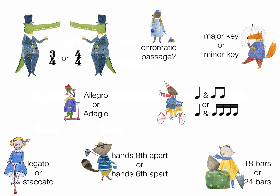Moving on to point number two: orally identify musical concepts. I'm going to play through the entire piece. As you listen, I'd like you to work out: is it in 3/4 or 4/4? Allegro or adagio? Legato or staccato? Are the hands an octave apart or a sixth apart? Is there 18 bars or 24 bars? In terms of rhythm, do you mainly hear crotchets and quavers or crotchets and semiquavers? Is the piece in a major key or a minor key? And do you hear any chromatic passages?